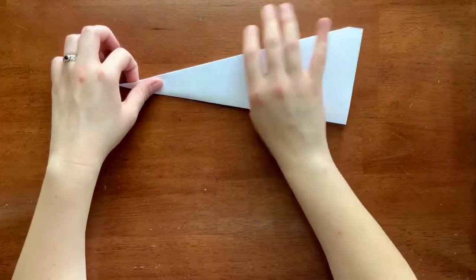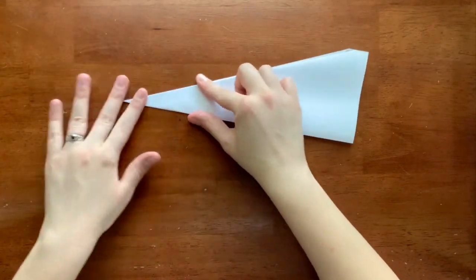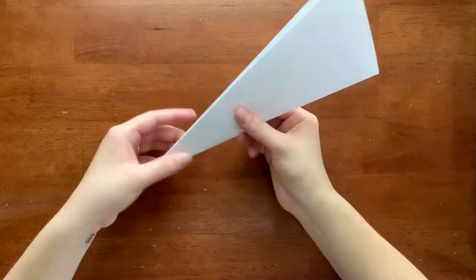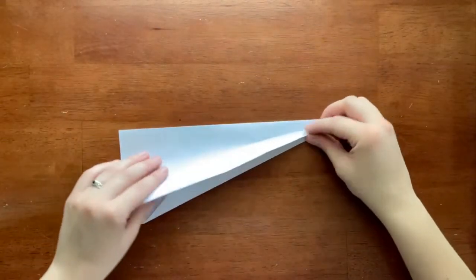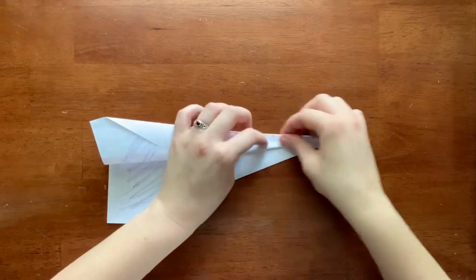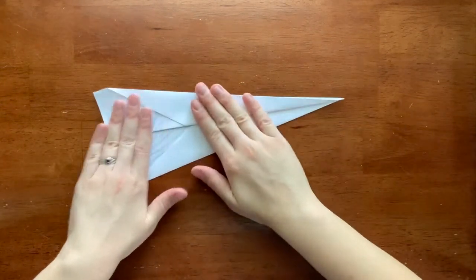Now we're going to fold the paper up in half like this. Pull the whole edge from the tip all the way to the end and line it up at the bottom of the plane like this.